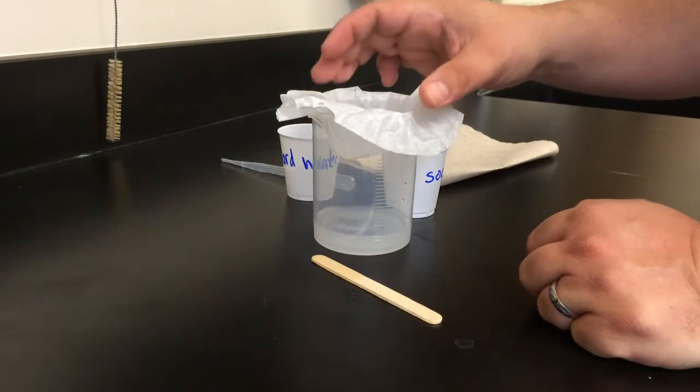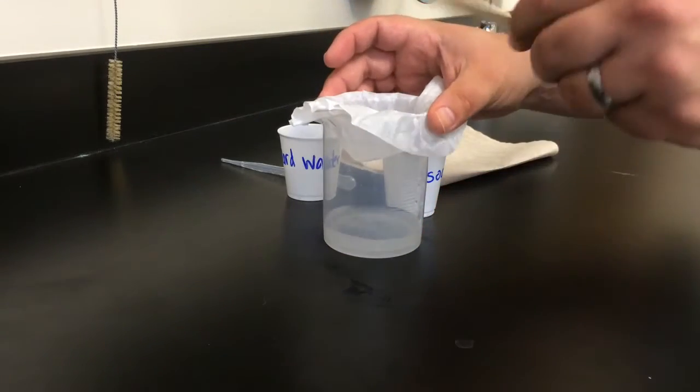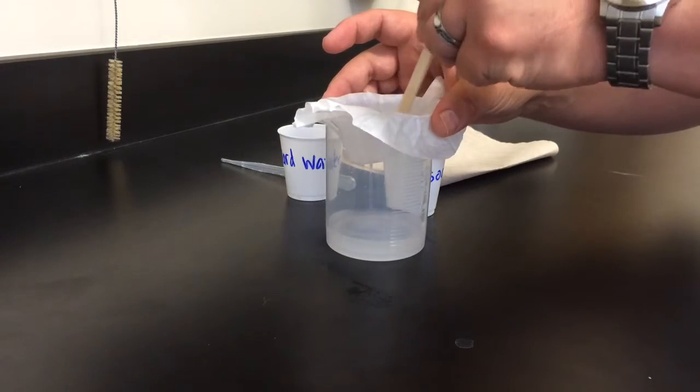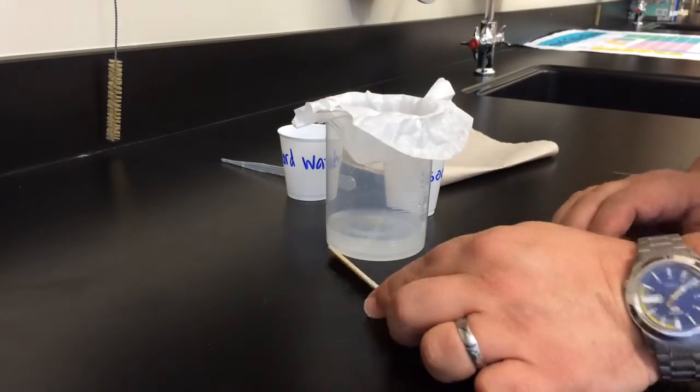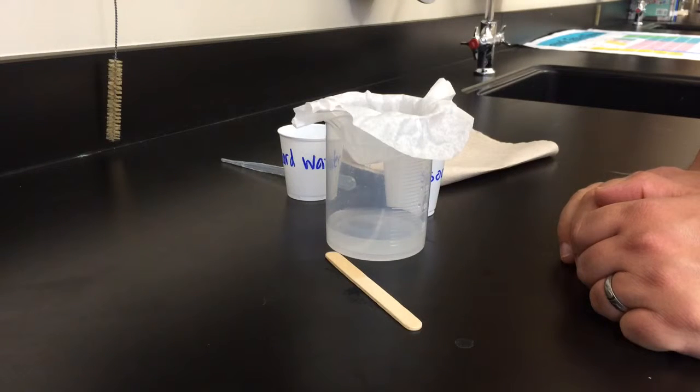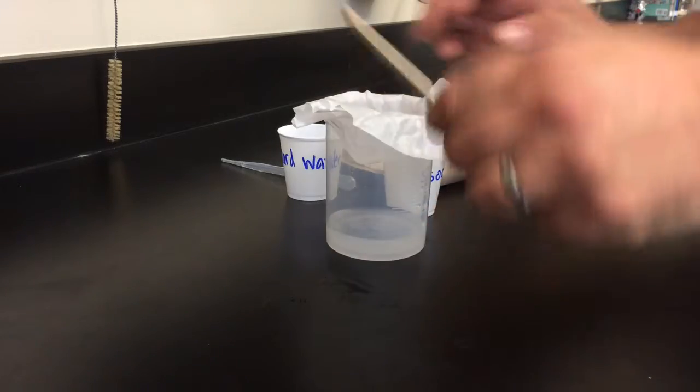And if I do it right, I'll end up with a whole lot of soap scum. Notice that I'm using the popsicle stick to move the liquid around up here. That helps it go through the filter but you want to make sure you don't put a hole in the filter because obviously that's going to make it hard to separate the soap scum from the water.